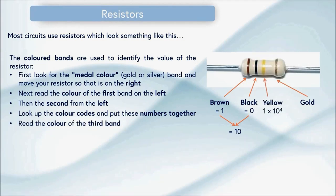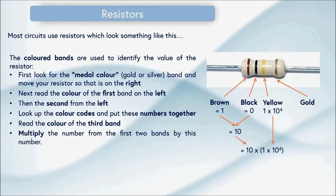Now we're going to read the colour of the third band which in this case is yellow. This is a multiplication factor and what we now need to do is to multiply the number from the first two bands by this multiplication factor. So in this example we end up with 10 times 1 times 10 to the power of 4. This gives us the value of the resistor in ohms which we can see is a hundred thousand ohms or 100k ohms for short.